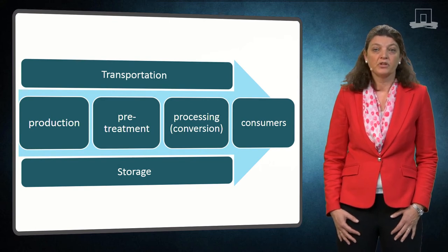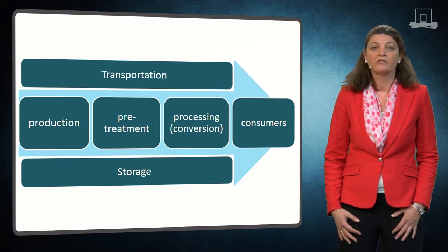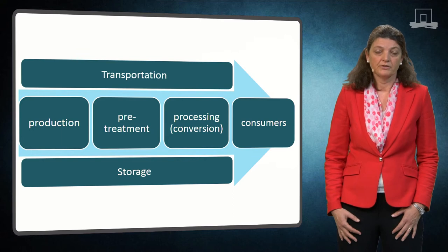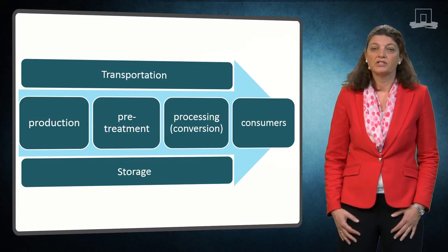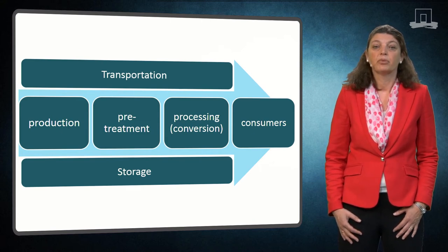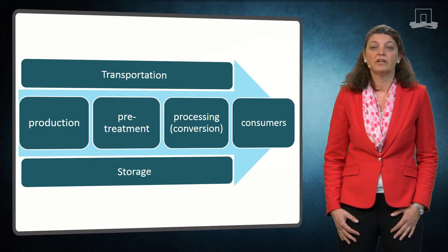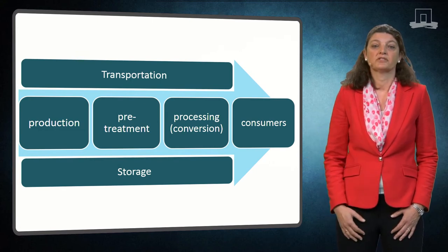These include producing, harvesting, transporting, aggregating, storing, pretreatment and processing of biomass. The various stages along the biomass supply chain are very interdependent and interconnected. This implies that changes in productivity and technology in one stage directly affect other stages.